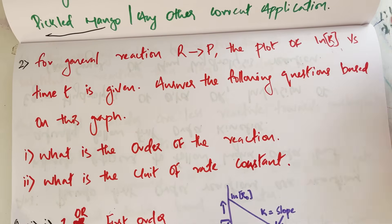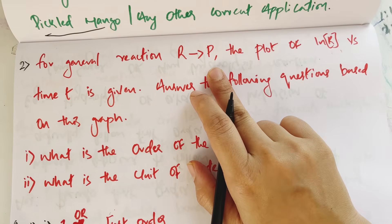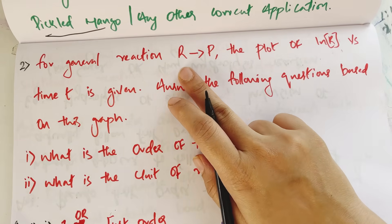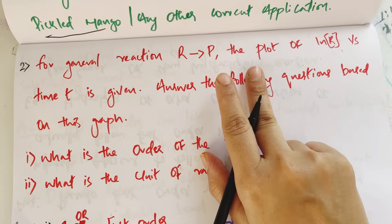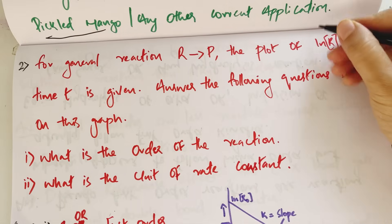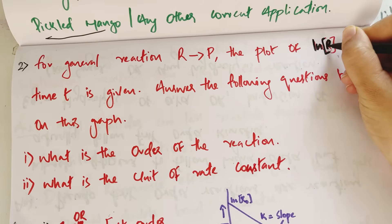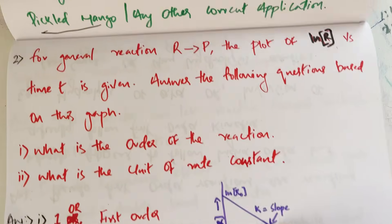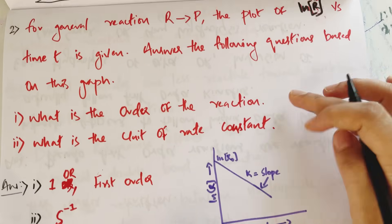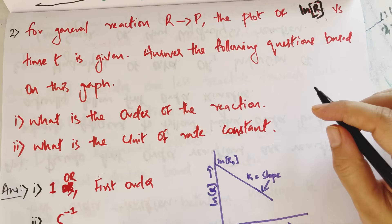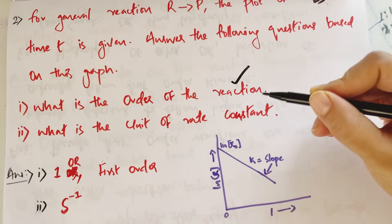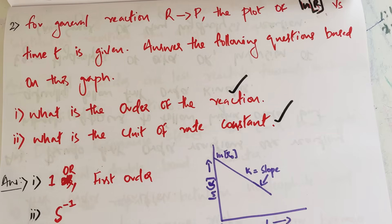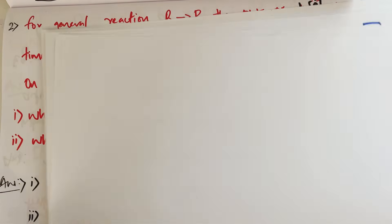The first question is for a general reaction, reactant to products. The plot of log — natural logarithm — of concentration of R versus time T is given. Answer the following questions based on the graph: What is the order of the reaction? What is the unit of rate constant?